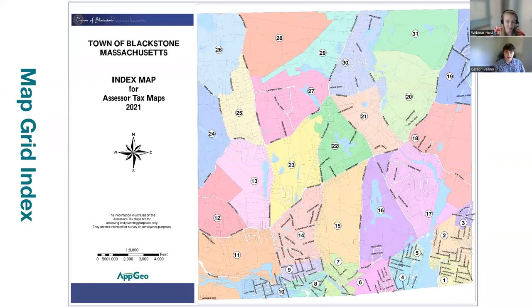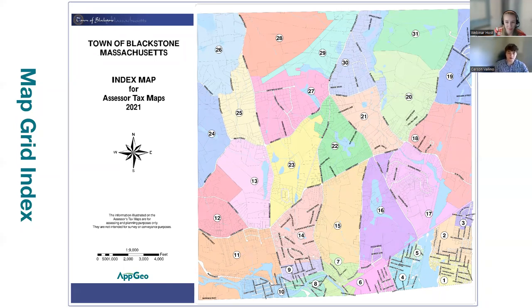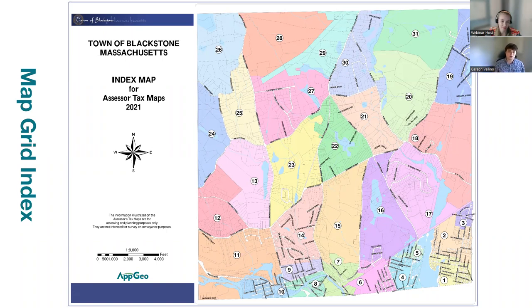We have our map grid index — a cover sheet for a set of tax maps, in this case for Blackstone, Massachusetts. This is a good quick reference guide that gives you an overview of the entire town and labels and color-symbolizes all of the individual sub-map groups in and around town. If you need to find a specific parcel, maybe around a certain water body, you can use this cover sheet to quickly find which tax map you need.